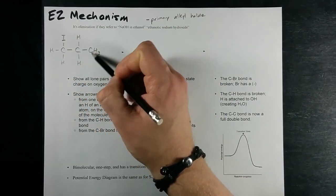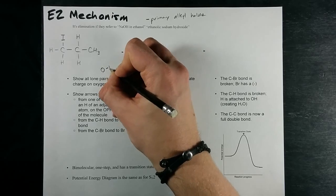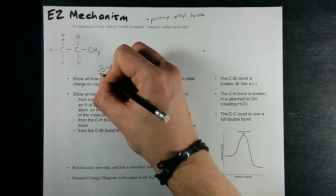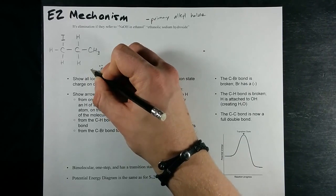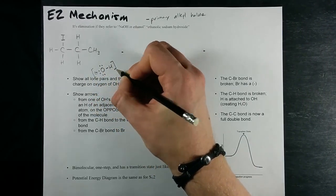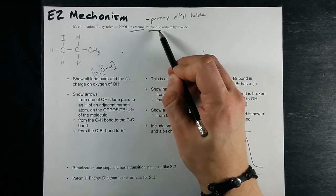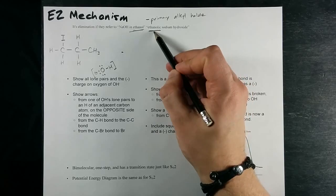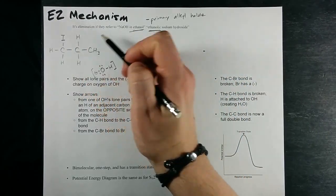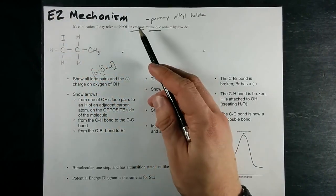You'll start with your primary alkyl halide. You'll have some concentration of a nucleophile. The other hint they may give you if you're in the IB program is that if they say in ethanol or ethanolic sodium hydroxide, that's their hint that they want an elimination mechanism as opposed to a substitution. So do E2, not SN2.